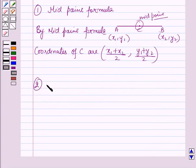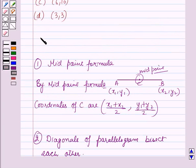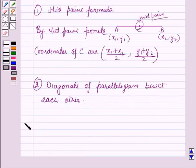And diagonals of a parallelogram bisect each other. Now these results will work out as a key idea for solving this question. And now we will start with the solution.